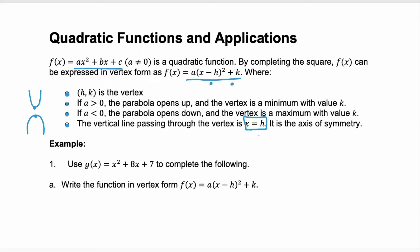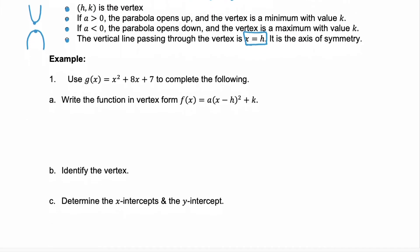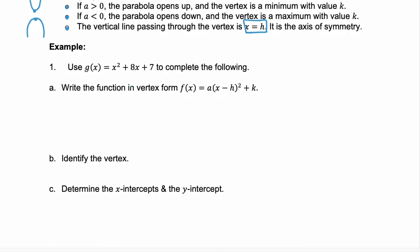Let's look at an example. We're given a quadratic function g of x, and that's x squared plus 8x plus 7, and we need to first write the function in vertex form. So to do that, we need to complete the square.